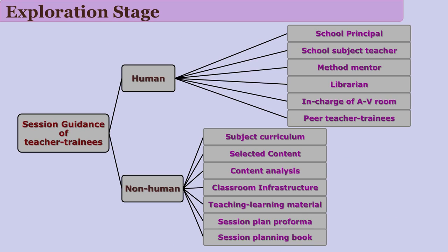While giving the topic, the subject teacher considers the school curriculum and tells the teacher trainee what has been taught, what the trainee is expected to teach, and what content will follow. The trainee has to consider 7th standard students. The principal of that school is one component. The curriculum, topic, and classroom infrastructure are all components that need to be considered.